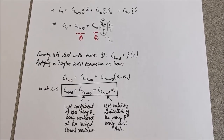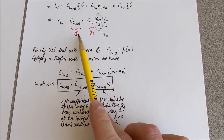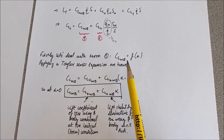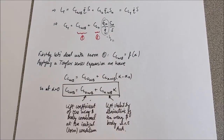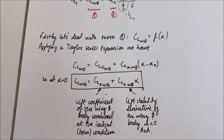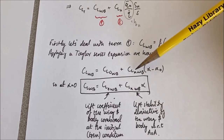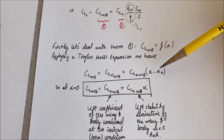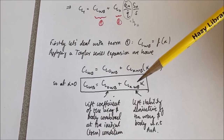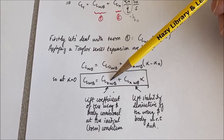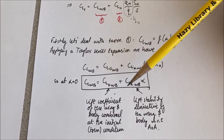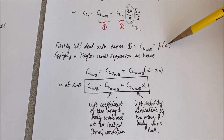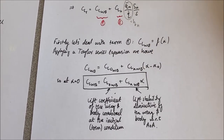We deal with these two coefficients separately. Firstly, let's look at CL wing-body, which is term 1. The lift coefficient of the wing and body is just a function of angle of attack, so we have a simple Taylor series expansion giving us two terms. This is the lift coefficient derivative with respect to angle of attack associated with the wing and body. We apply our reference condition at alpha zero equals zero, and we're left with the lift coefficient of the wing and body combined at the trim condition, plus the lift stability derivative of the wing and body with respect to angle of attack, multiplied by angle of attack.